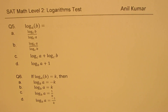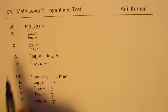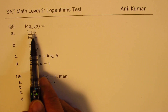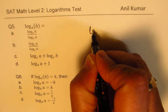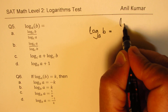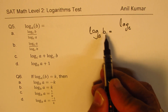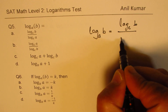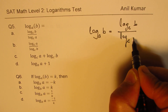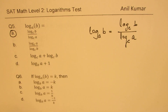Question 5 is the change of base formula. We have log_a(b) and need to change the base to c. The formula is: log_a(b) = log_c(b) divided by log_c(a). You can change to any base c. That matches option a, so that is the answer.